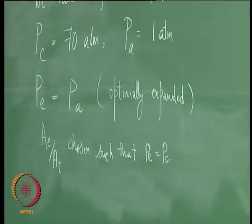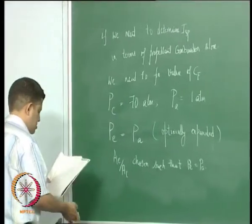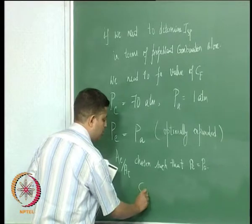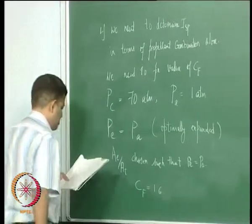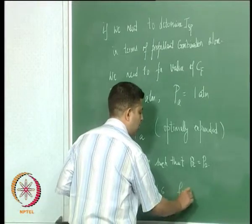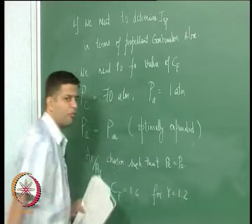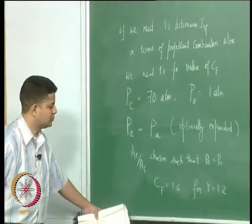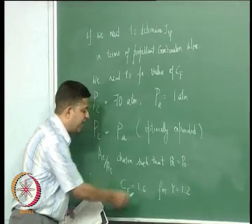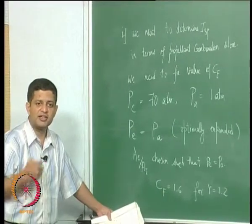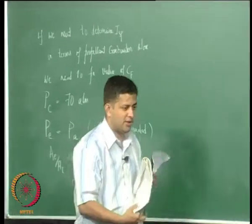Having fixed these conditions, we will get a value of CF of around 1.6 for gamma equal to 1.2. With CF fixed, we can now evaluate various propellants and see how good each one of them is.